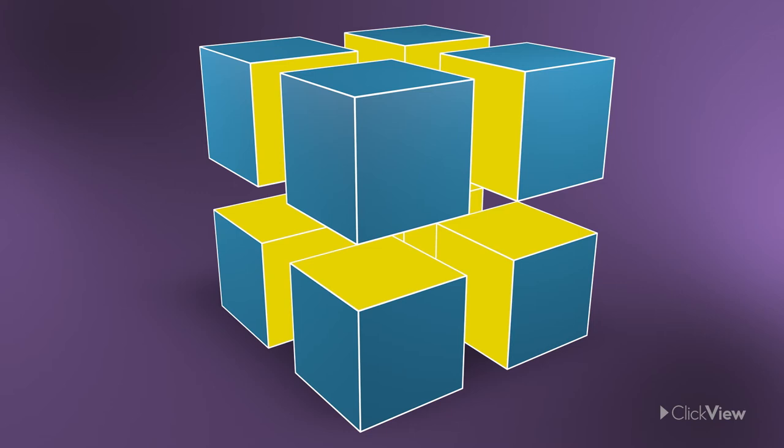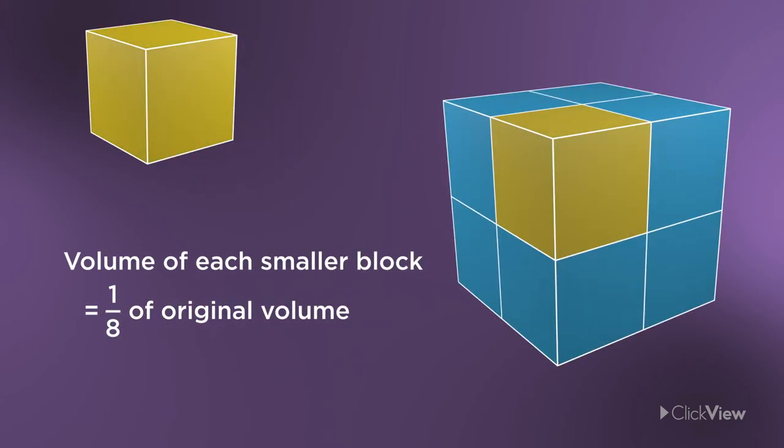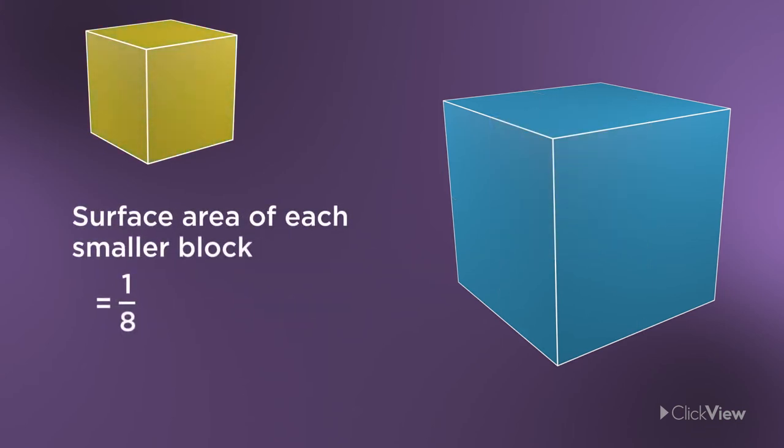Let's look closely at those numbers. Each of those eight blocks is just one-eighth of the original volume. The total volume of the block hasn't changed. After pulling it apart, its surface area has now doubled.